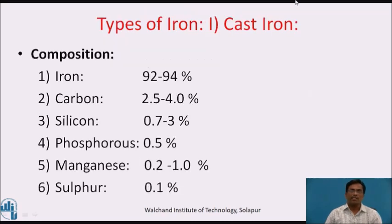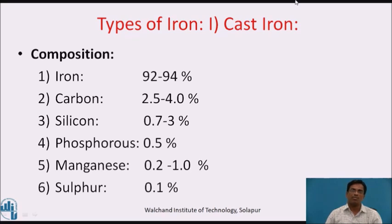Types of irons. First, cast iron. Composition: iron is 92 to 94 percent, carbon is 2.5 to 4 percent, silicon is 0.7 to 3 percent, phosphorus is 0.5 percent, manganese is 0.2 to 1 percent, and sulphur is 0.1 percent. This is the composition of cast iron.